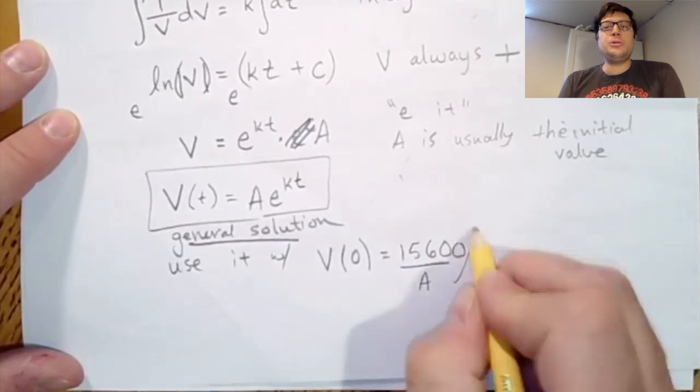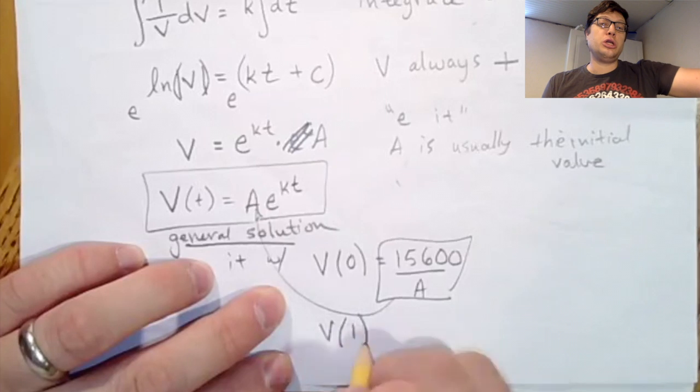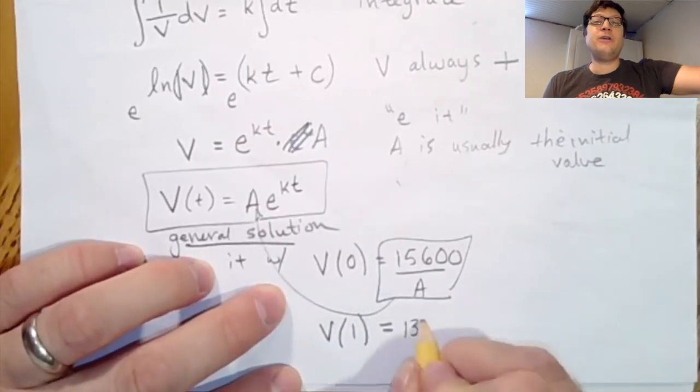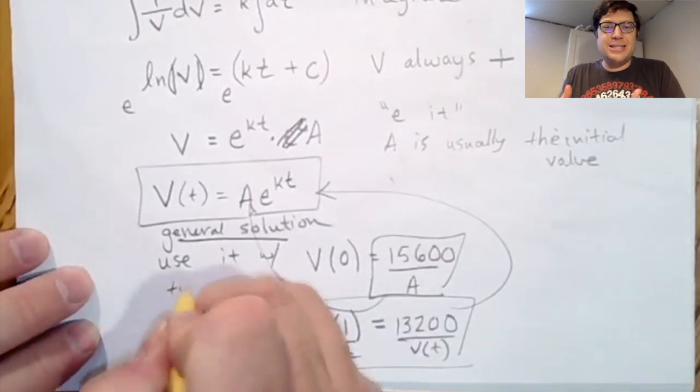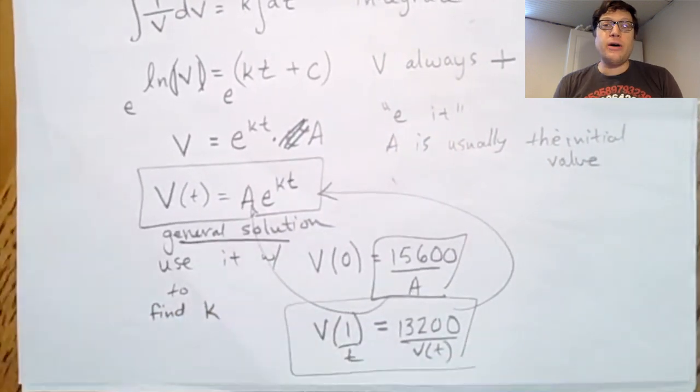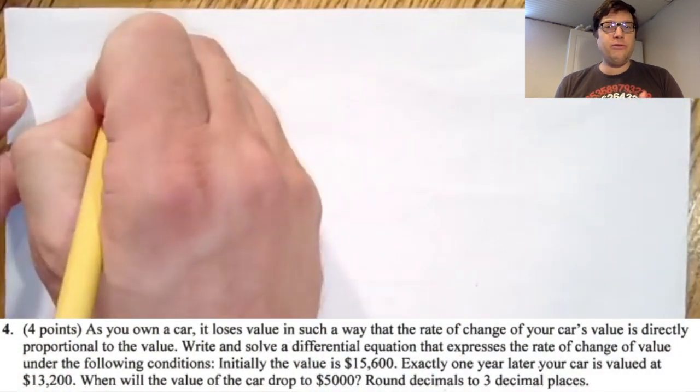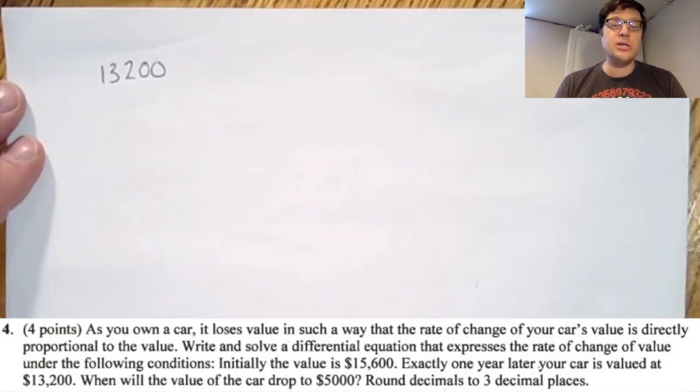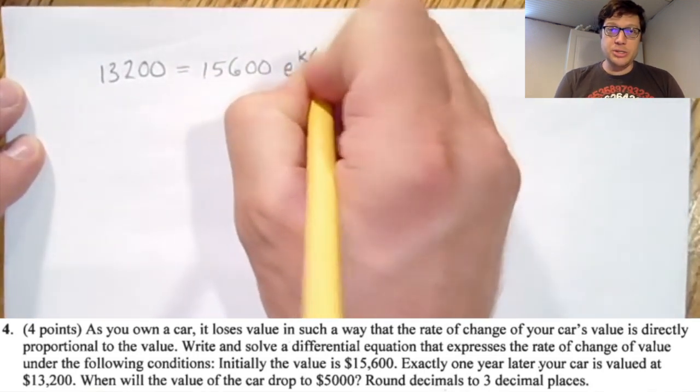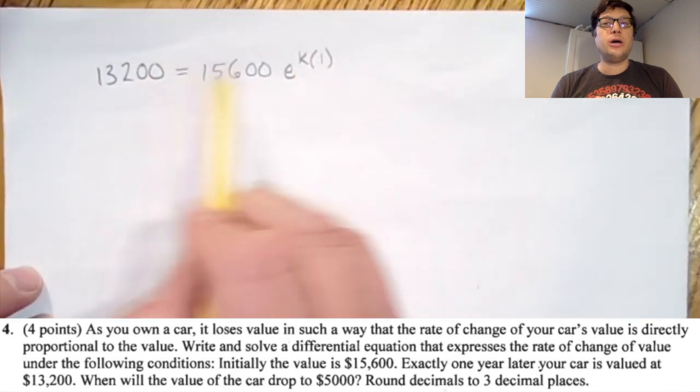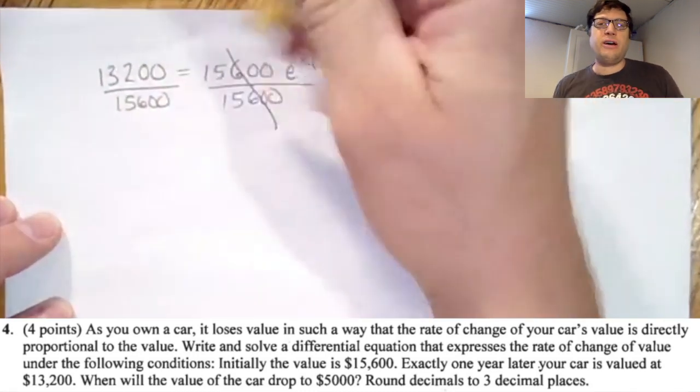Right now though, we need to actually use the information. So the information that's given is that the car is initially worth, so V of zero, 15,600. And then one year later, the car depreciates in value by some constant of proportionality to a value of 13,200. So our goal is to use kind of like a multi-system of equations to figure out not only K because that's dependent on the situation and the car, but also to figure out the actual answer to the question, how much time does it take for the car to be worth $5,000?